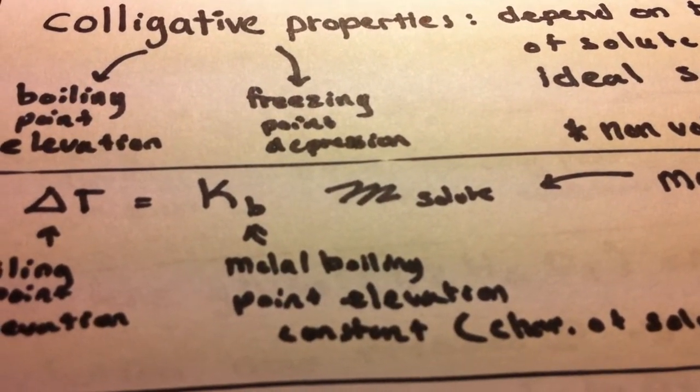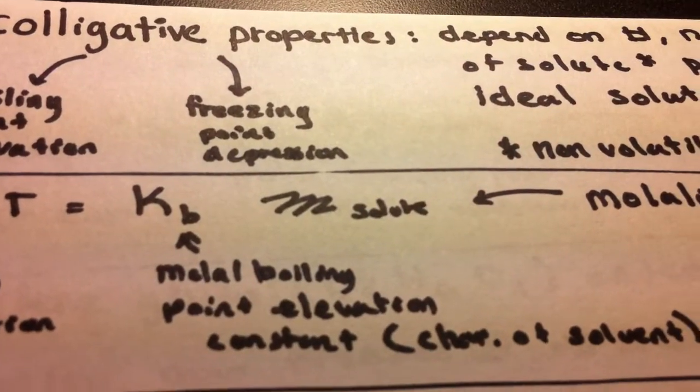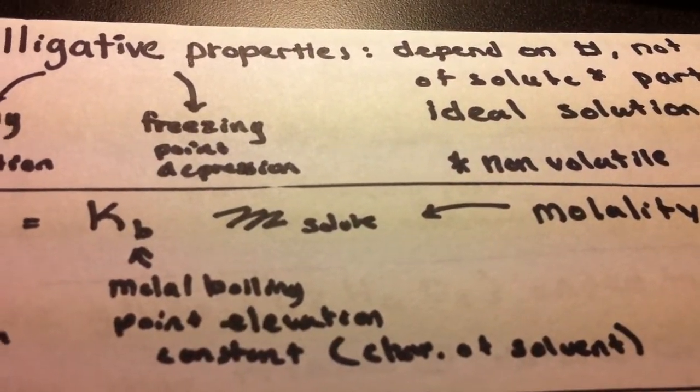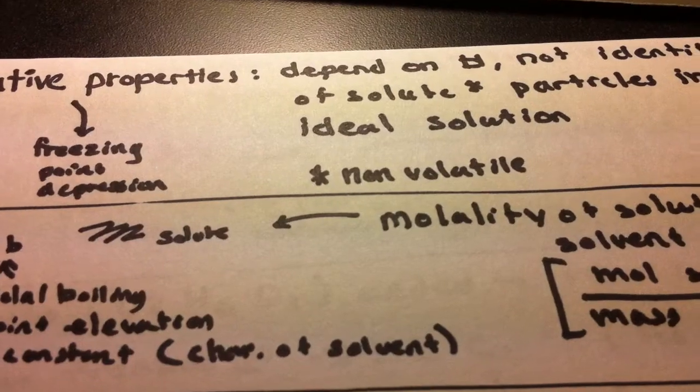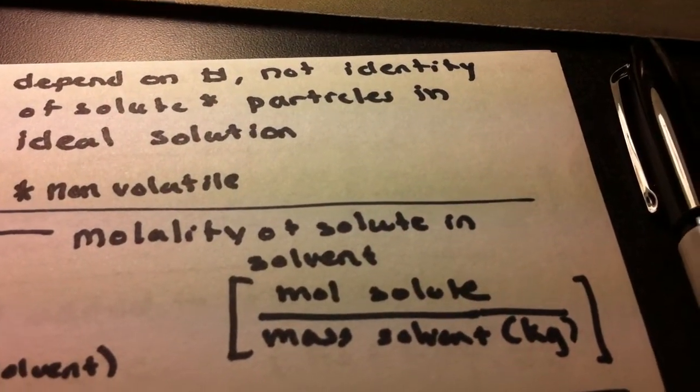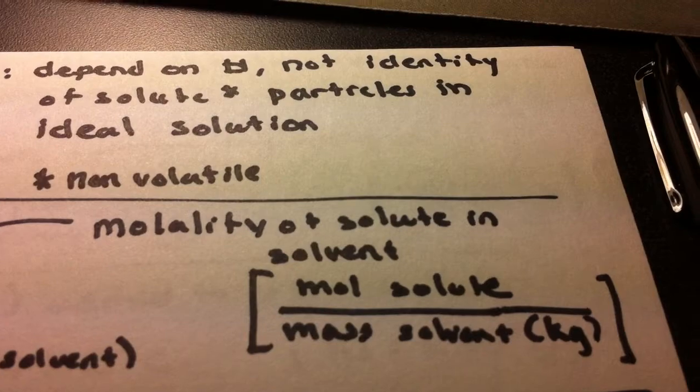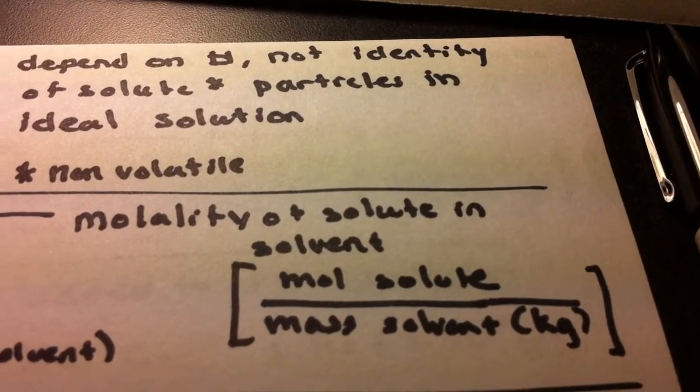KB is going to refer to the molal boiling point elevation constant, and the constant is going to be dependent on the type of solvent you're using. M solute refers to the molality of the solute in the solvent, and that's going to be represented by moles of solute over the mass of the solvent in kilograms.